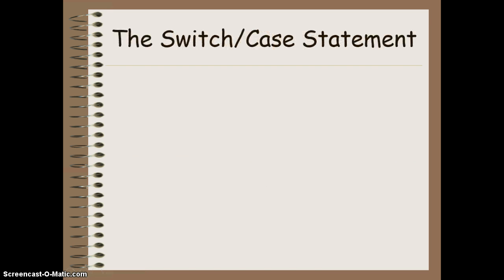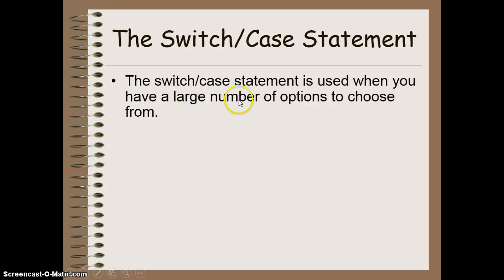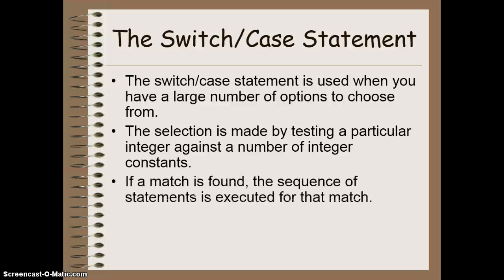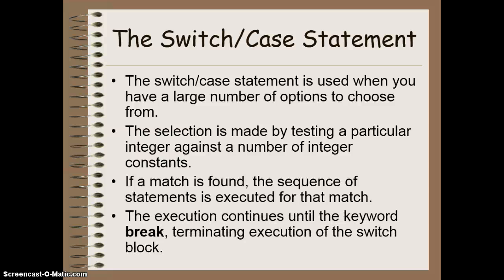Now, the other option was our switch case statement. And this is when we have a large number of options to choose from, specifically in a menu type scenario. The selection is made by testing a particular integer against a number of integer constants. Once we find a match, so once it equals each other, we execute the statements for that particular match. And we continue executing statements until we reach a break statement, which will block out of that whole switch block and move to the next section of code.